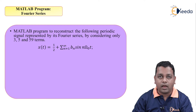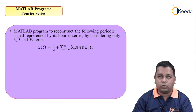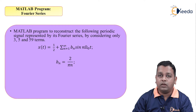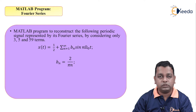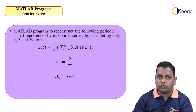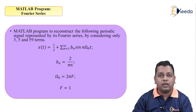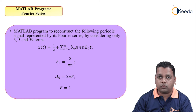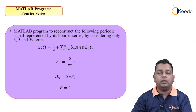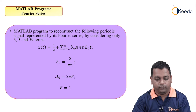The signal x(t) is given as one-half added to the summation from n equals one to infinity of b_n multiplied by sine of n times omega_0 times t, where b_n equals two divided by pi times n, and omega_0 equals two*pi*f. The angular frequency omega_0 is derived by setting f equal to one.